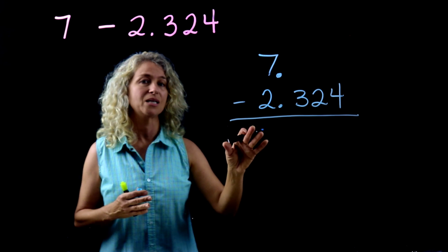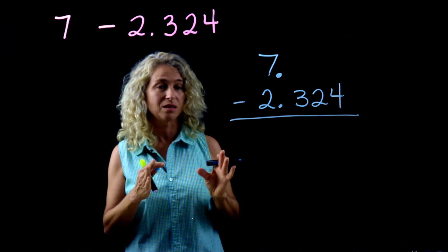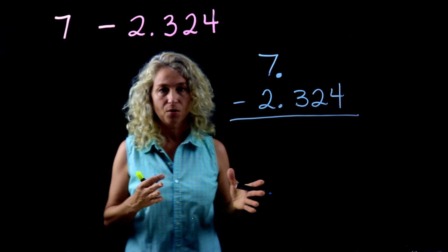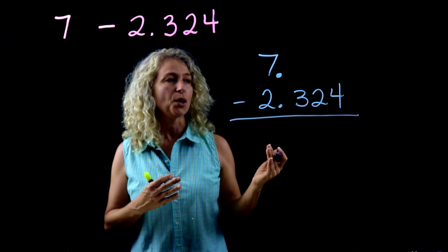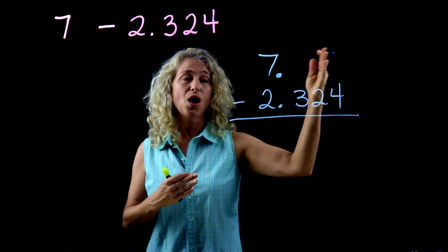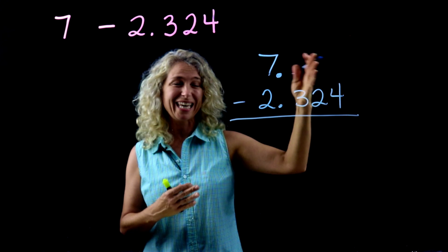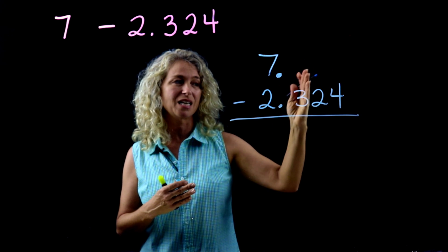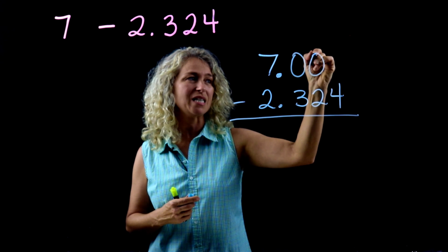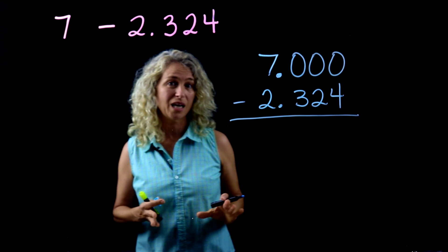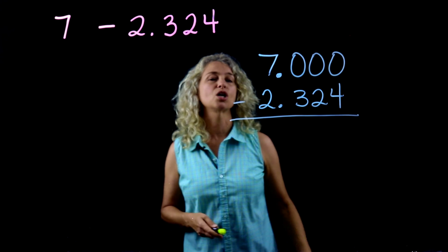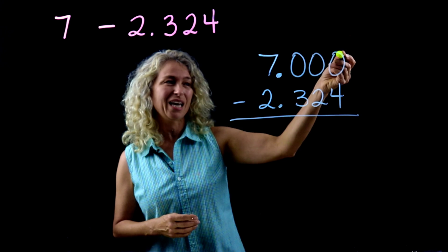Knowing how to write the problem correctly and which number goes on top is half the battle. Many students reverse these and end up with a negative number. Since there's nothing in the tenths, hundredths, or thousandths place above, you need to fill those positions in with zeros.